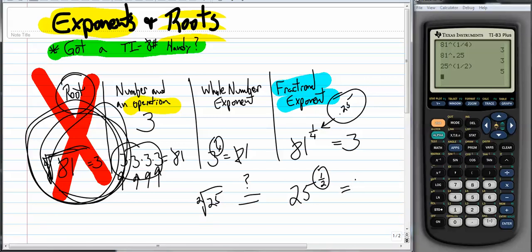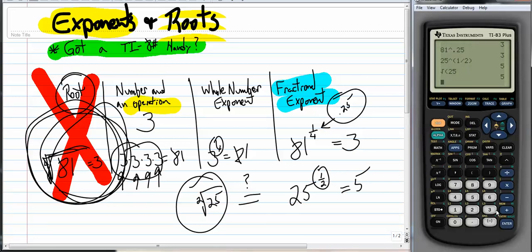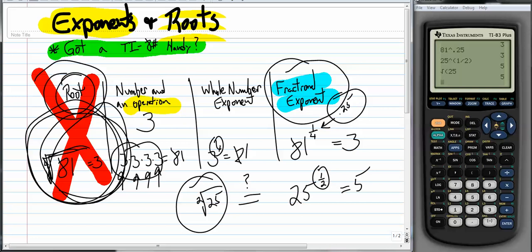So 25 to the 1 half power is 5. And just for giggles, let's go the square root of 25. I get 5. So basically, I know I'm repeating myself, but if you use a fractional exponent, you can get around having to do this, you know, 4th root, 5th root stuff.